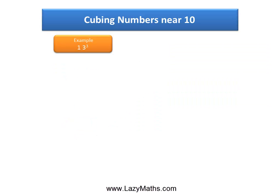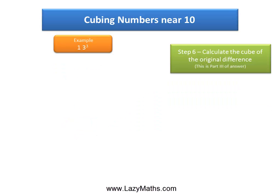Now the last part of the answer, or part 3, is derived simply by calculating the cube of that difference. The difference was plus 3, and the cube of positive 3 is positive 27, and this becomes part 3 of the answer.